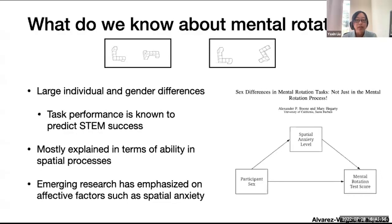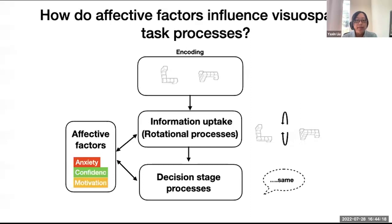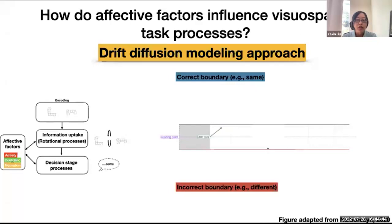Here, we break down test processes into different stages. After the encoding of stimulus, there is first the information uptake processes, and second the decision stage processes. Although affective factors can have influences on all stages, we specifically examine those two. We use a novel computational modeling approach, namely drift diffusion modeling, to formalize the stages of the processes. An advantage of this approach is that the rotational processes can be disentangled from the decision stage processes.